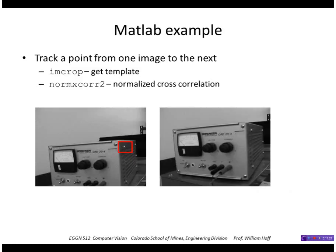So let's do a quick example here. Let's track a point from one image to the next. So I'll use this function called imcrop to extract the template from the first image. And I'll use MATLAB's normxcorr2.